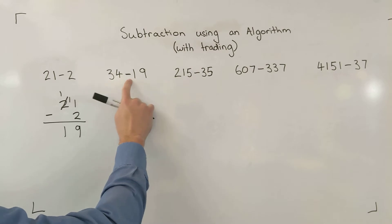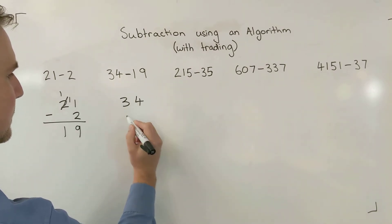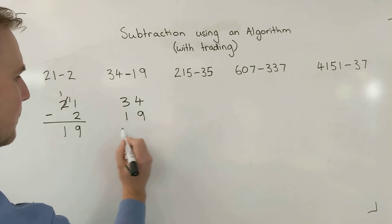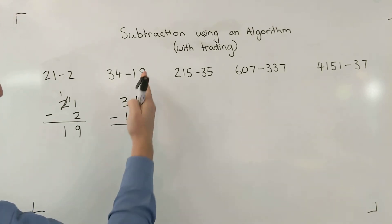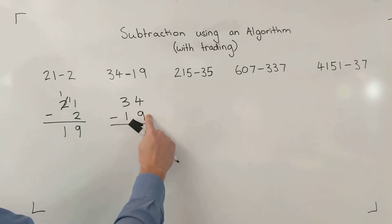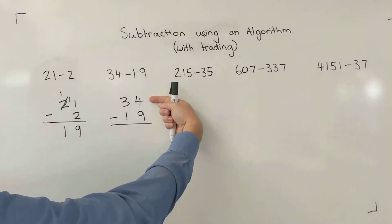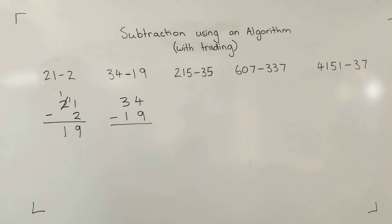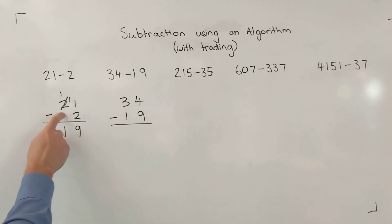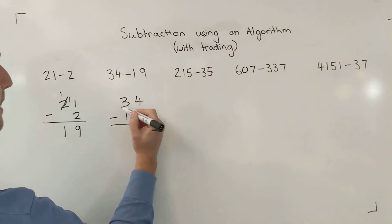Let's try this second example: 34 take away 19. Writing it out nice and neatly, keeping those place value columns neat. 4 take away 9 — I know I need to take away from the top number, but I can't do this because the bottom number is bigger than the top number. Same situation — I'm going to have to trade.